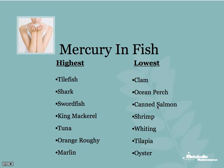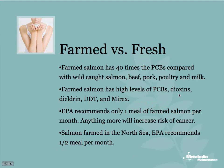Regarding farm versus fresh salmon: I got into an argument with the manager of a seafood restaurant who believed farmed salmon is far superior to fresh. But according to EPA information, farmed salmon has 40 times the PCBs compared to wild salmon, beef, pork, poultry, and milk, as well as having high levels of other toxins. The EPA recommends only one meal of farmed salmon per month — anything more than that will increase your risk of cancer.